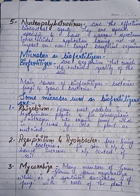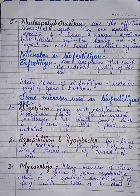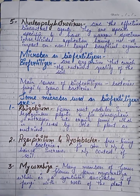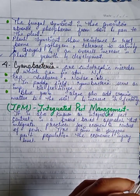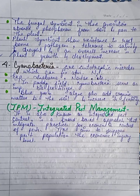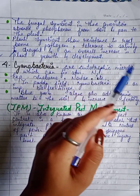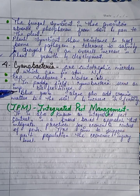Second is Mycorrhizae. Many members of the genus Glomus form mycorrhizae, which is a symbiotic association of fungi with the roots of plants. The fungal symbionts absorb phosphorus from soil and pass it to the plant. Plant symbionts also show resistance to root-borne pathogens, tolerance to salinity and drought, and overall increase in plant growth and development.